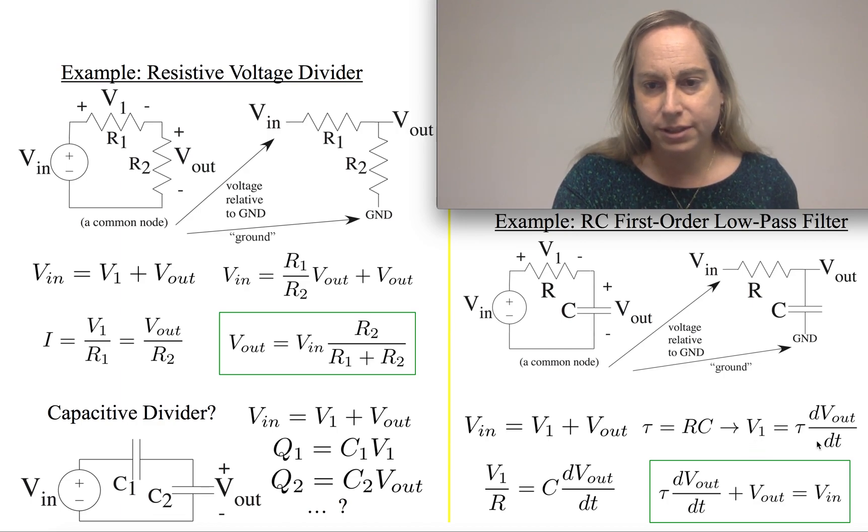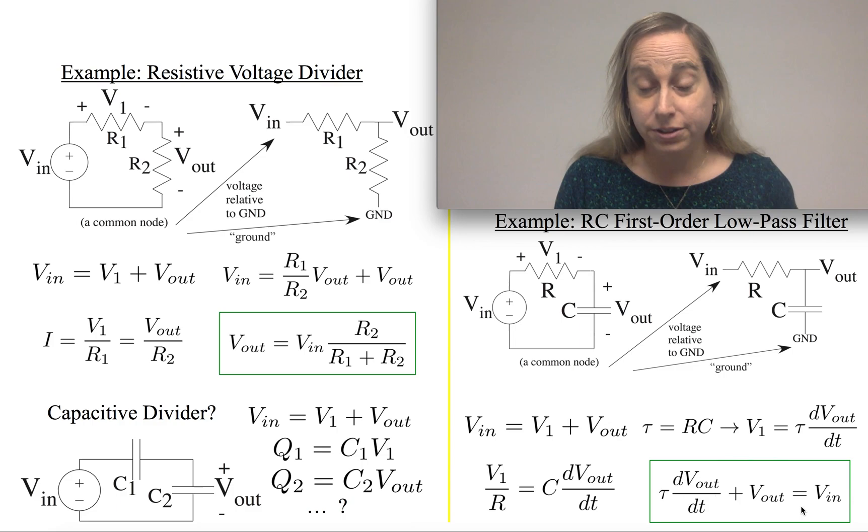So then you'd say, well, this is how it says V1. As a result, I get this is my differential equation where tau is RC of the output voltage as a function of input voltage. This is a first-order differential equation.